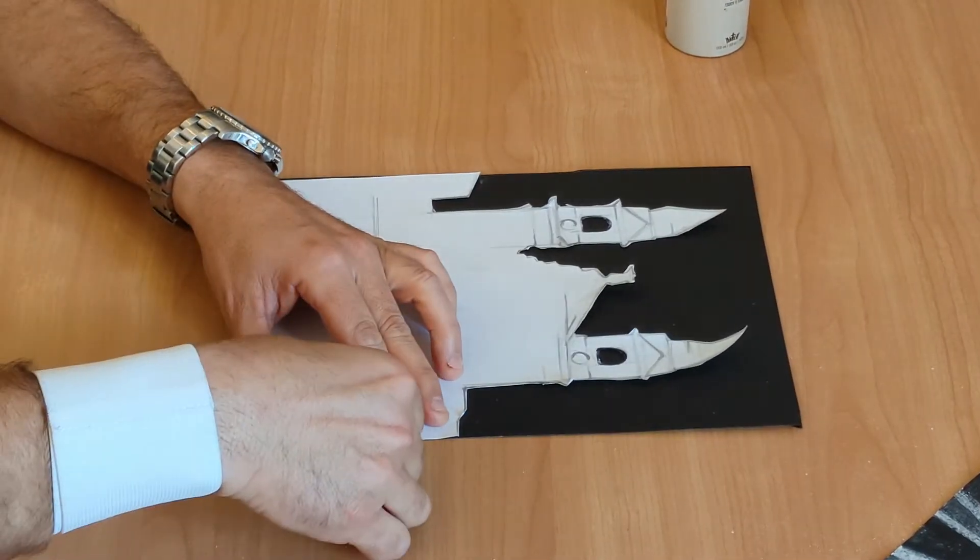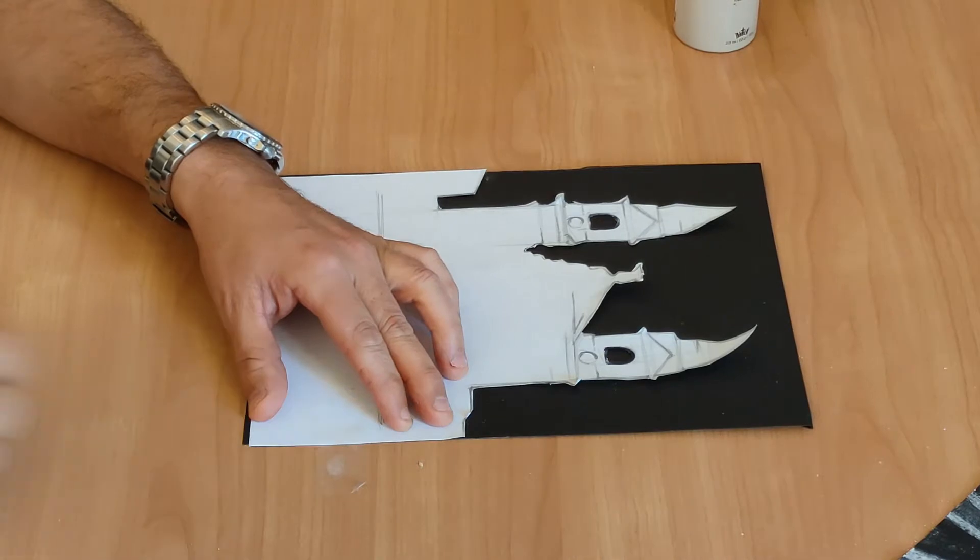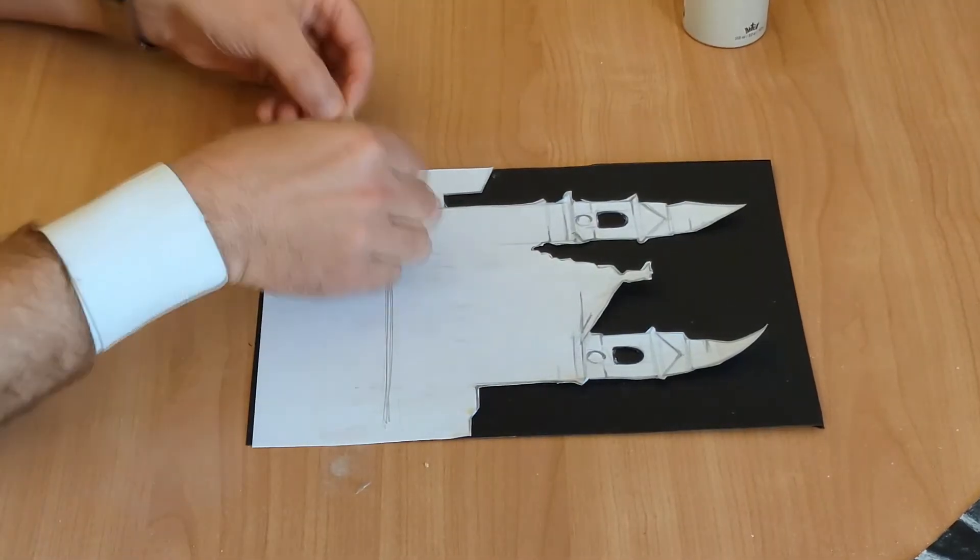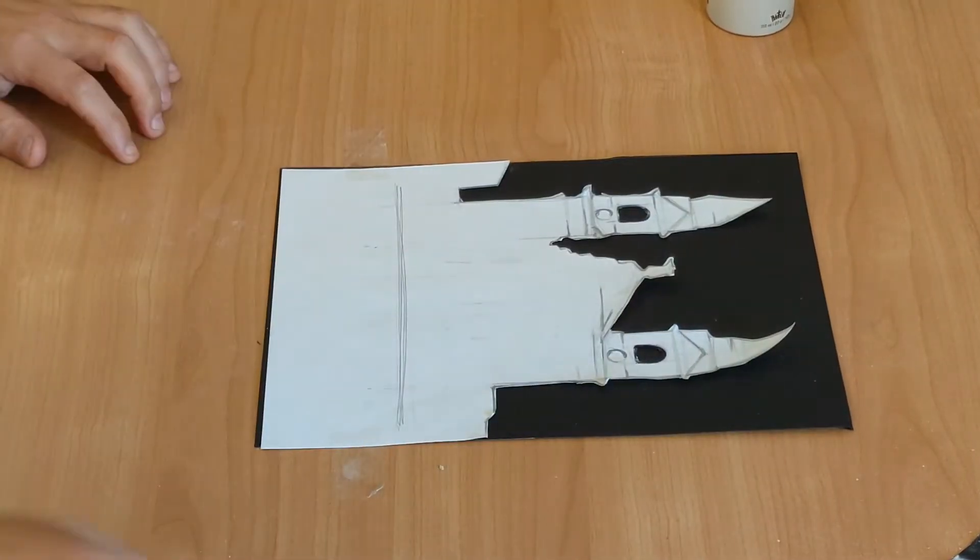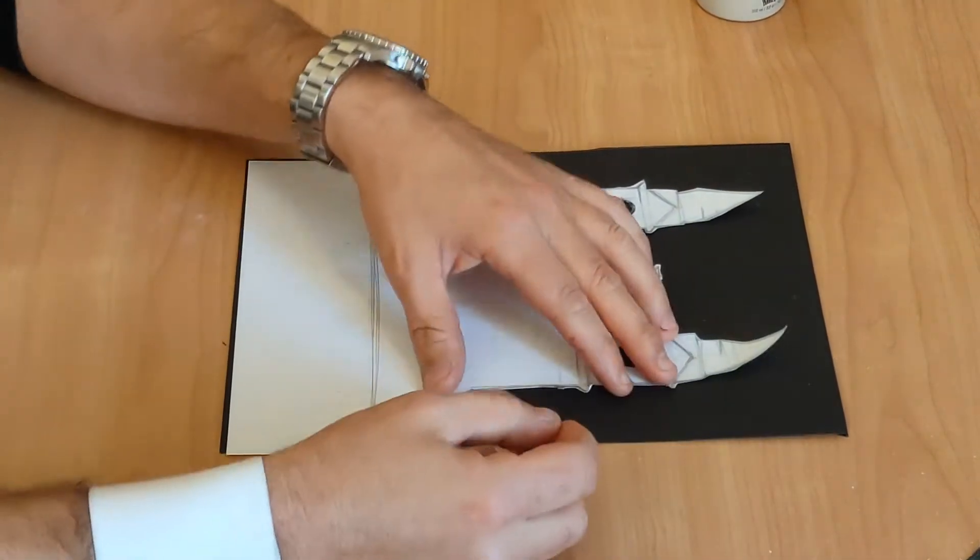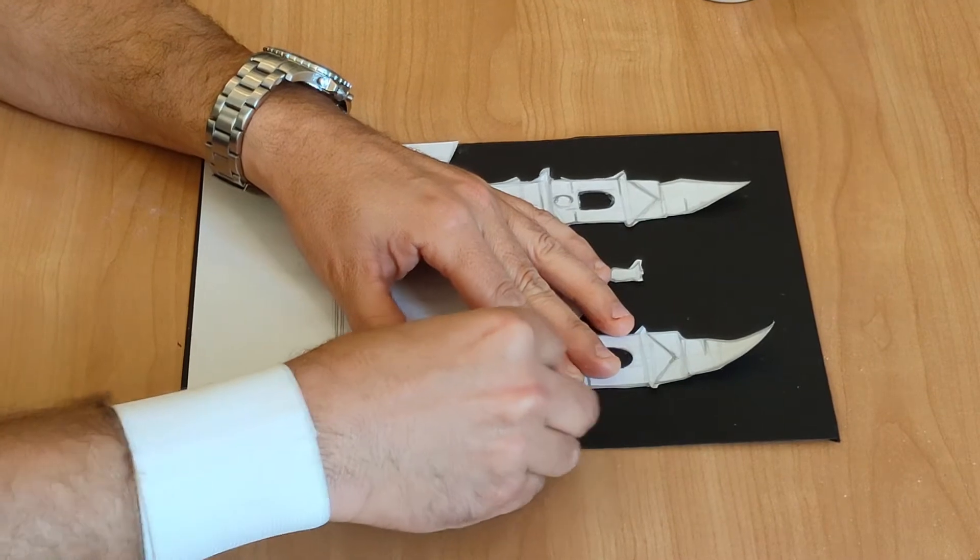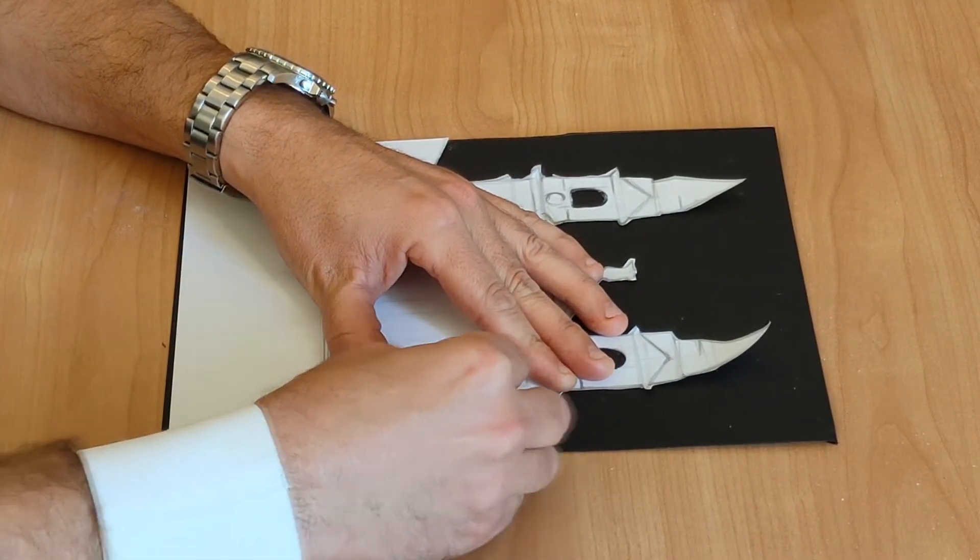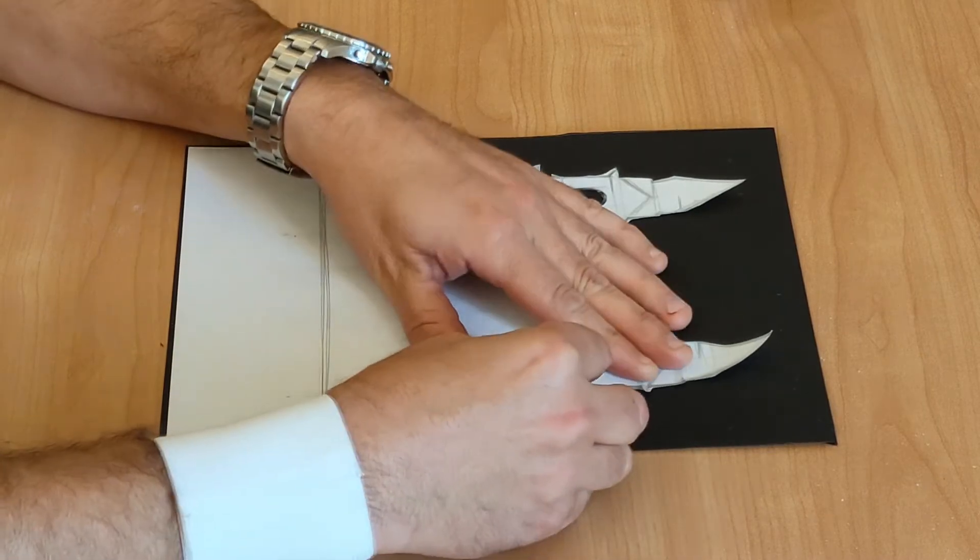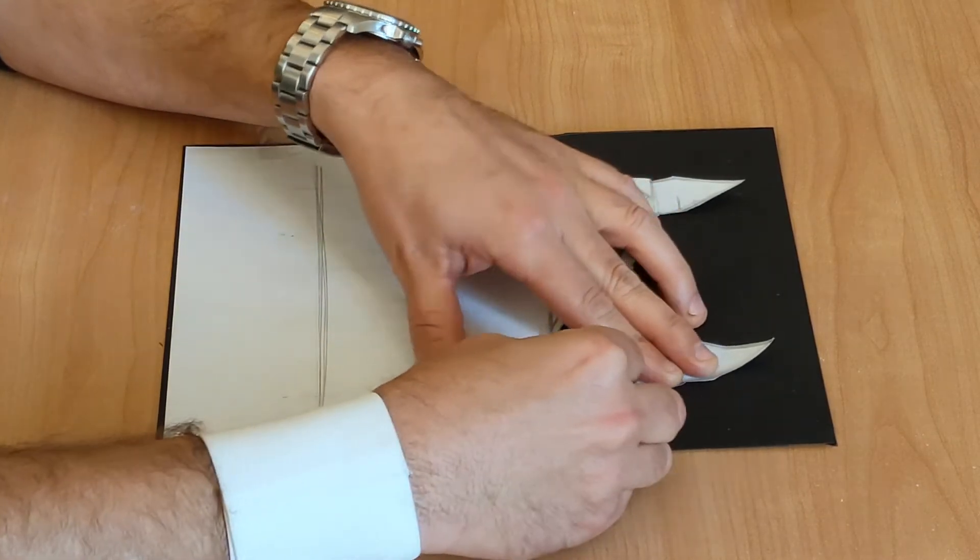We are doing the same thing as before, attaching the cutout onto the black cardboard, and slowly we start once again coloring the outline of the cutout with the chalk.